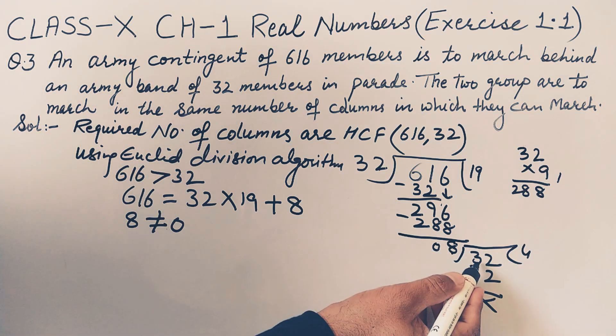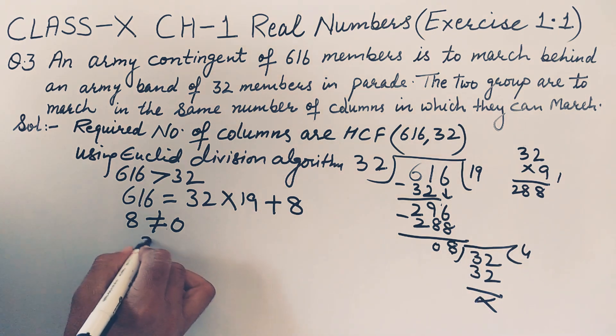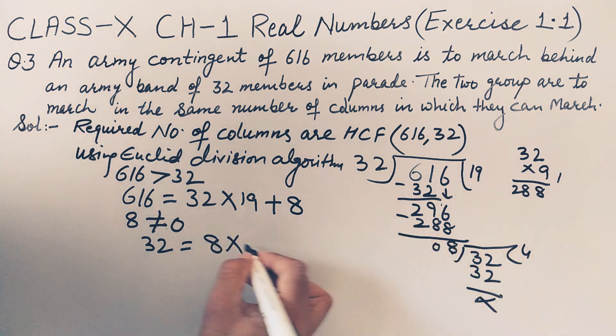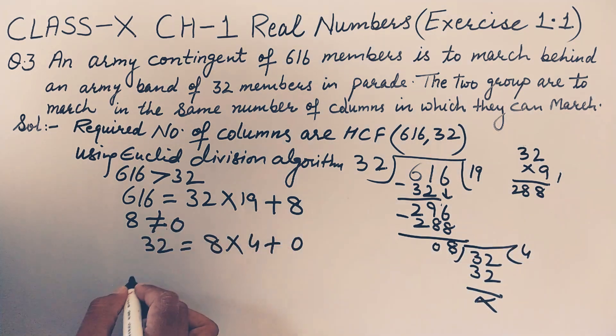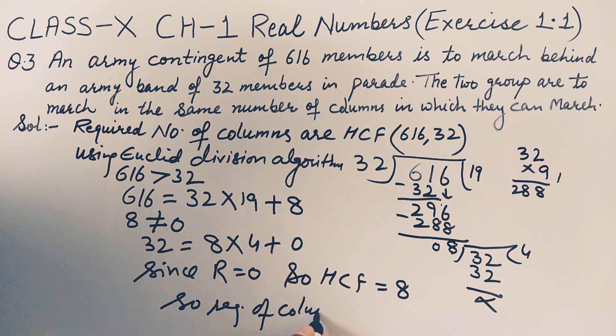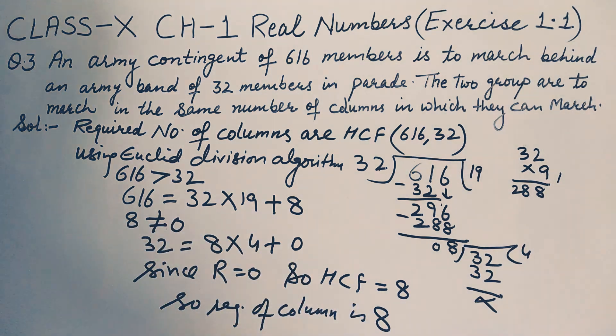So again apply Euclid's division lemma. Dividend is equal to divisor into quotient plus remainder. Now remainder is 0. Since r is 0, so required HCF is 8. Required number of columns is 8. So this is how we will do this question. Thanks for watching.